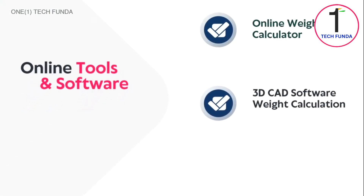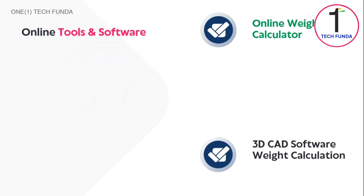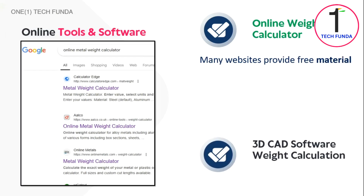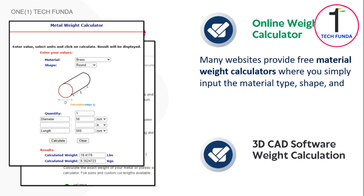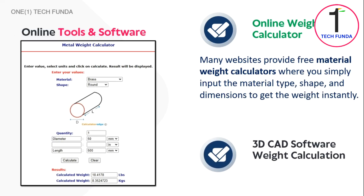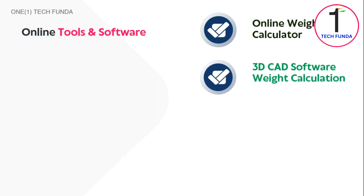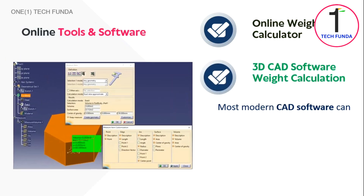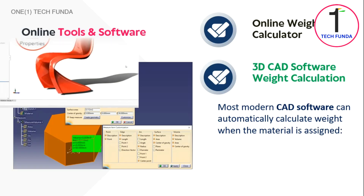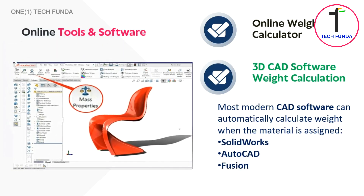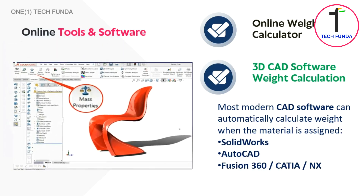Online tools and software. Many websites offer free material weight calculators where you simply enter the material type, shape, and dimensions to instantly get the weight. Most modern 3D CAD software can also automatically calculate weight once the material is assigned. Some of these software programs include SolidWorks, AutoCAD, Fusion 360, Catia, and NX.